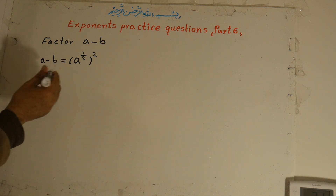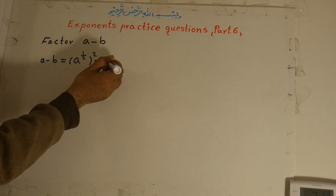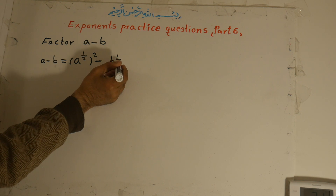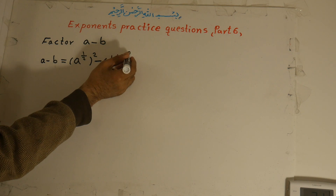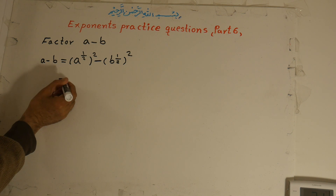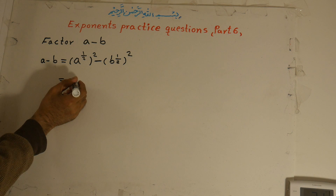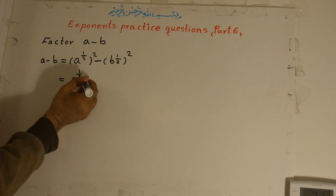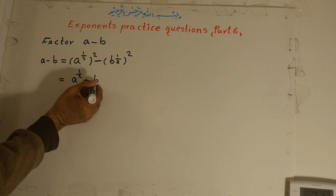So a to the power of one is equal to a. The same thing applies: minus b to the power of one-half, all to the power of two. This is a form of conjugate factoring. Referring to lesson 121e, we can factor this into two factors: a to the power of one-half, plus b to the power of one-half.